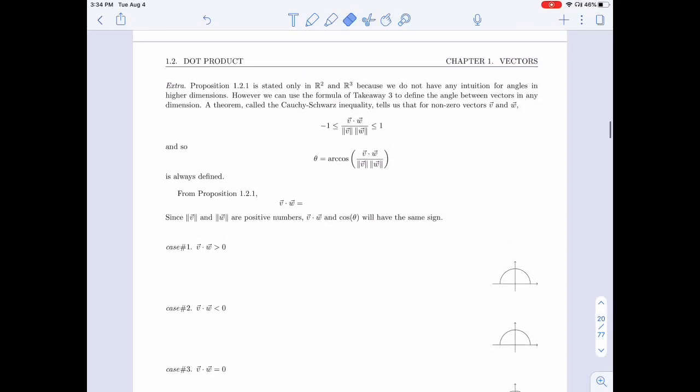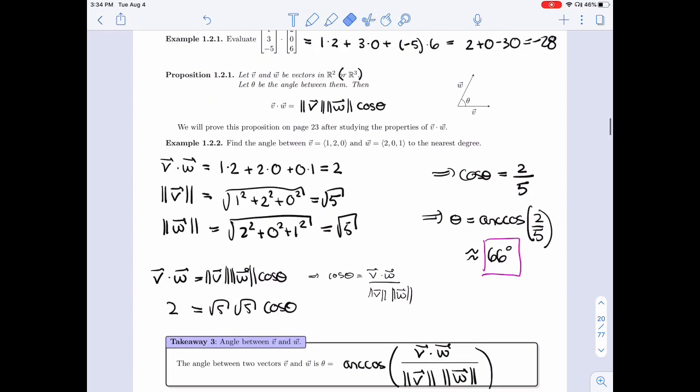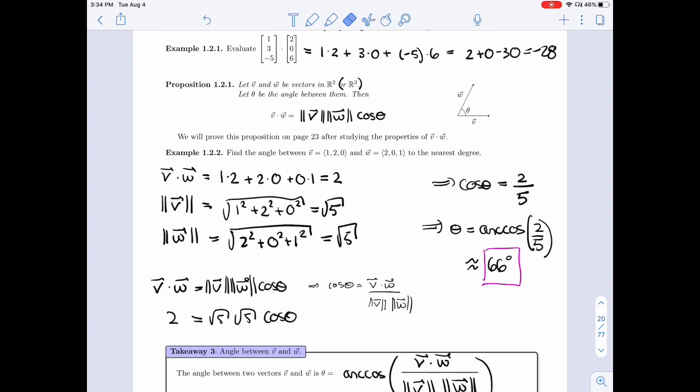In the last video, we saw this proposition here that told us that the dot product was equal to the product of the lengths times the cosine of this angle here, the angle between 0 and 180, that's between V and W.